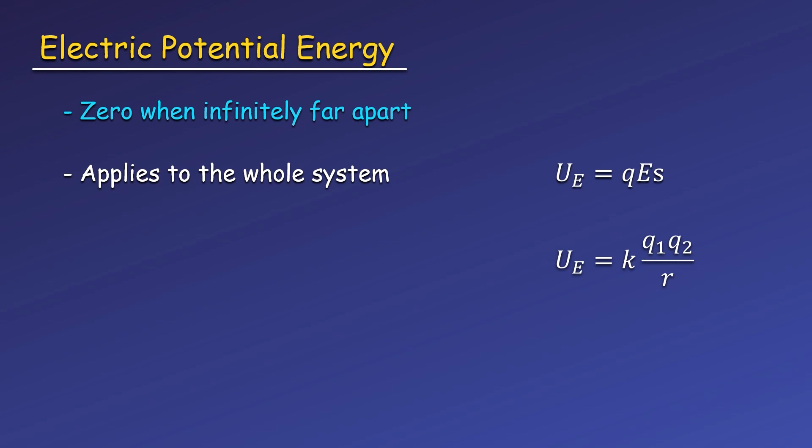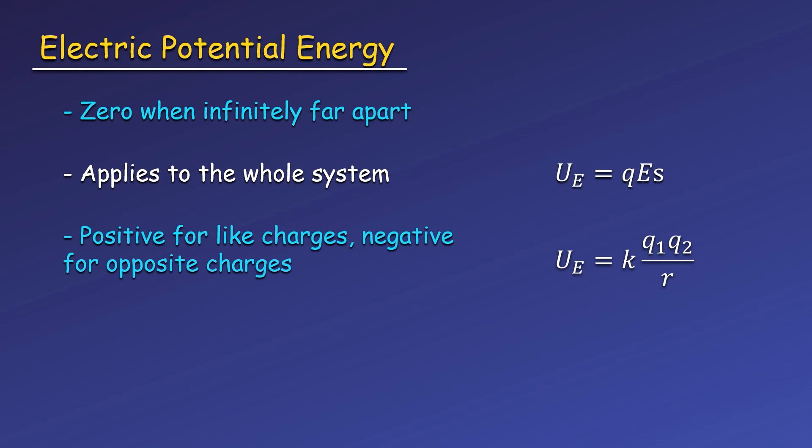Second, this is the potential energy of the whole system. Just like with the charge and capacitor, the electric potential energy here is for both charges. In our example, we were holding one charge fixed, but in reality, if we held two like charges next to each other and then released them, they will both move as the potential energy is converted to kinetic energy. Third, our equation for potential energy will be positive for two like charges and negative for opposite charges. This makes sense because we typically interpret negative energies for two objects that are bound together, such as the moon and Earth or Earth and Sun for gravity. Opposite charges pull toward each other so they don't escape, while like charges repel and get further and further away. Finally, the electric force is conservative, and that's why we're able to get an electric potential energy.